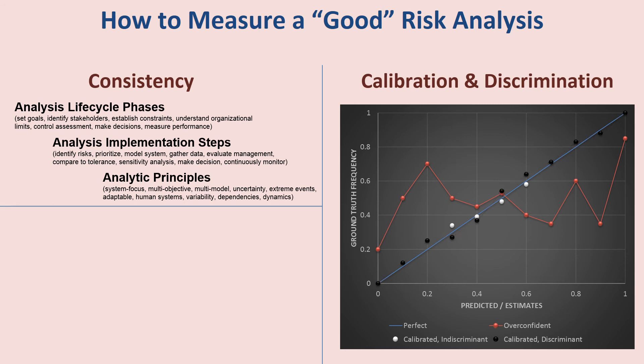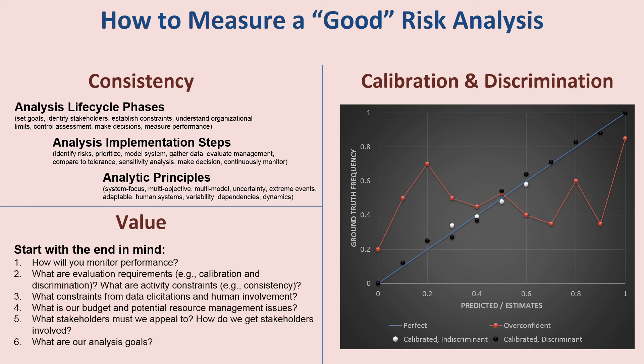The last thing to talk about is value. To illustrate value, we need to start with the end in mind. Just having a consistent process with calibrated and discriminative values doesn't necessarily mean it will produce a positive impact on decisions. For example, when people go to the weather channel, they don't necessarily want highly predictive weather — they want to feel comfortable that they're getting information, and that comfort is part of the value the risk assessment provides.